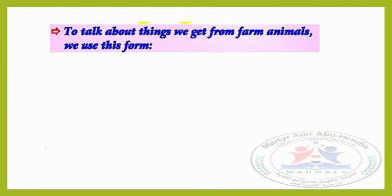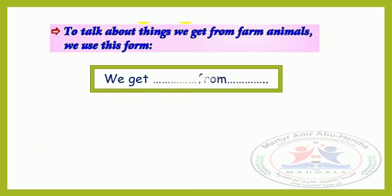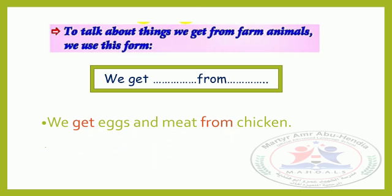To talk about things we get from farm animals, لما أكون بتكلم على الأشياء اللي بنحصل عليها من حيوانات المزرعة, we use the structure: 'We get... from...' For example, we get eggs and meat from a chicken. After 'get' بنجيب المنتجات, then 'from' يجي ورها الأنمال — we get [product] from [animal].